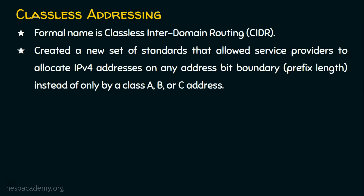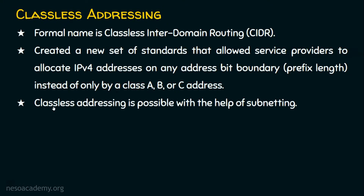With class A, B, or C, there are chances for IP addresses to be wasted. In classless addressing, we can create our own subnet mask to determine exactly how many devices are needed for our network, enabling us to use IP addresses sparingly rather than wasting a large block. This classless addressing is made possible through subnetting.